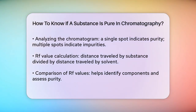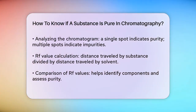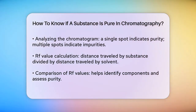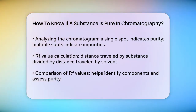Another way to check purity is by calculating the RF value, or retention factor, for each spot. The RF value is calculated by dividing the distance the substance traveled by the distance the solvent traveled. Different substances have different RF values, so by comparing these values to known values, you can identify the components and determine if the substance is pure or a mixture.